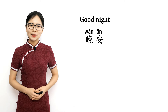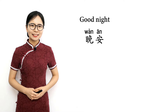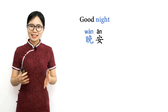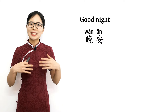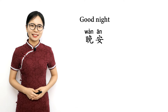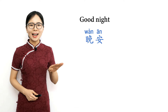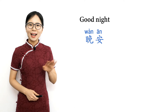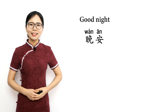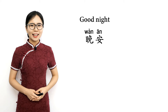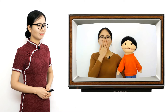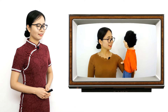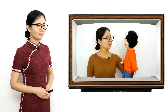When it's time to go to bed, you can tell your family or friends 晚安, which means good night. 晚 means night and 安 means safe or peaceful, so 晚安 means 'have a peaceful night' — in other words, good night. Please repeat after me: 晚安, 晚安 — good night. When someone says 晚安 to you, say 晚安 back. 晚安 — good night. 晚安 — good night.